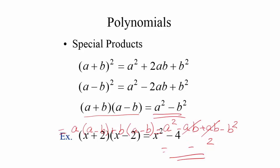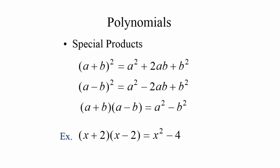Here is an example applying the difference of squares: (x + 2)(x - 2). The first term squared is x^2, and the second term squared is 2^2 = 4. So the product is x^2 - 4.